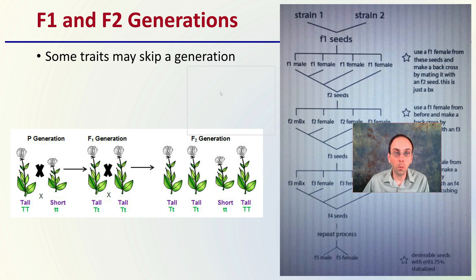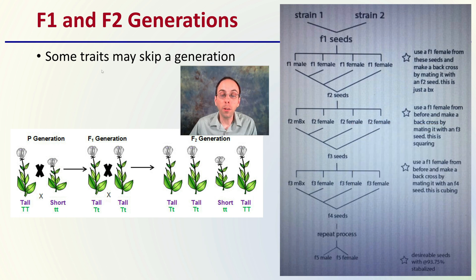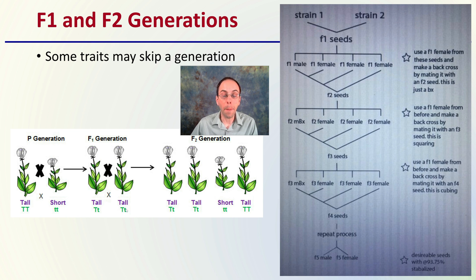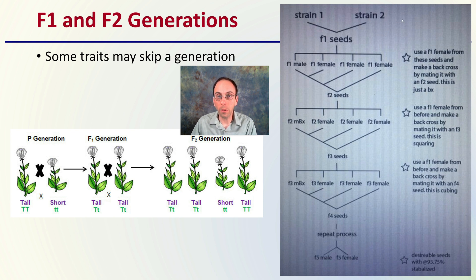You might hear things like the F1 and F2 generation, because some traits may skip a generation. Here we have the parental generation, the F1, and the F2. In this example the parental generation has a tall plant and a short plant. When these are bred together, all resulting offspring are tall but heterozygous — they all contain that hidden recessive allele. However when we breed those F1s together, the short varieties come back — they skipped a generation. Keeping a breeding lineage, like a family tree tracking cannabis strains, is important for tracking traits.